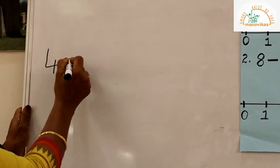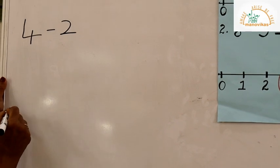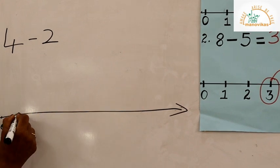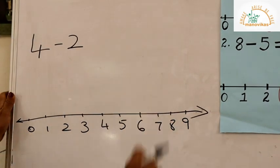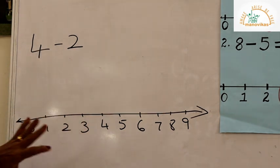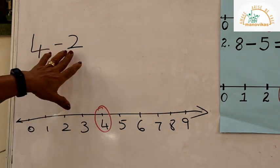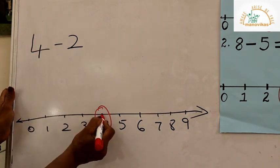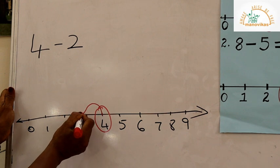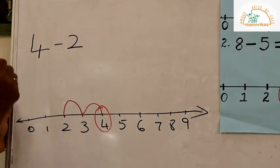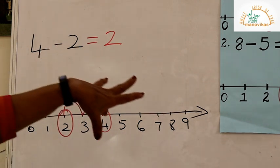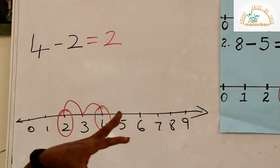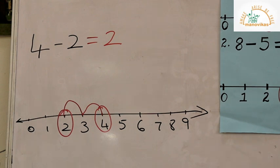Suppose we are given 4 minus 2. We draw a number line and write numbers spaced out starting from 0. Our number 4 is here — circle the number 4. We have to give 2 jumps to the left: from 4 we take 1 jump and reach 3, then another jump and reach 2. So 4 minus 2 gives us 2. The difference is 2. Remember: when we subtract on a number line, we jump towards the left.